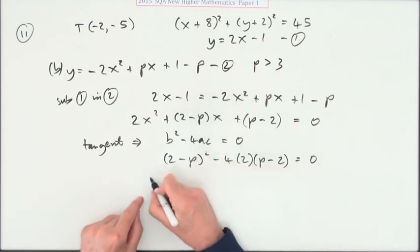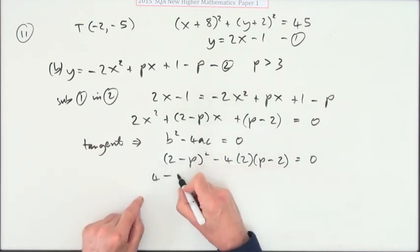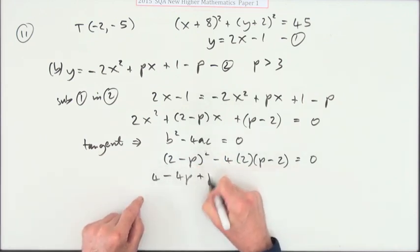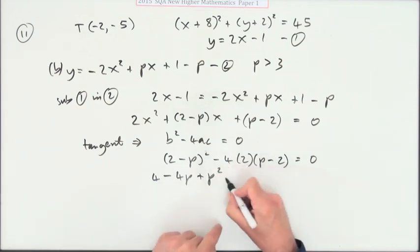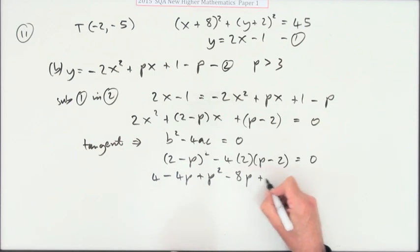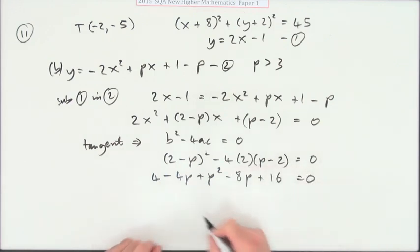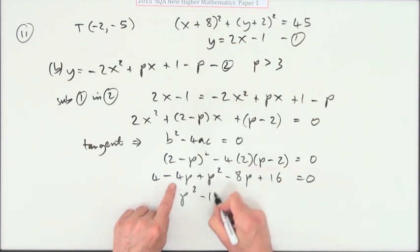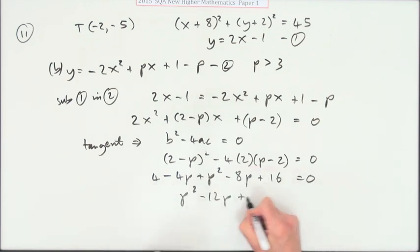Multiply that out. Square the bracket: square the first, twice the product will be minus 4p, square the last, p². Minus 8 times the bracket: minus 8p but plus 8 times 2, plus 16. We're getting there. That'll be p² minus 12 lots of p and a plus 20 equals 0. Almost there.